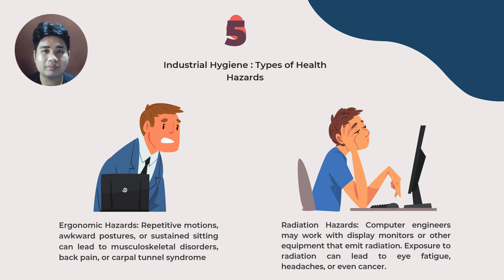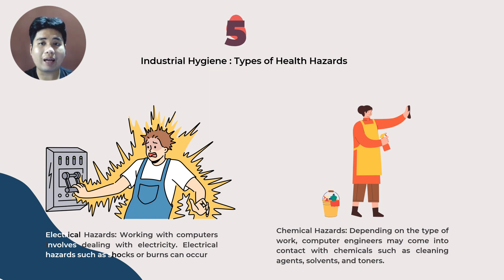We also have electrical hazards, which are prevalent in our working field. Working with computers involves dealing with electricity, and hazards such as shocks or burns can occur if proper safety measures are not followed. We also have chemical hazards present in our workplace, depending on the type of work being done. Computer engineers may come into contact with chemicals such as cleaning agents, solvents, and toner, which can pose risks if not handled properly. As computer engineers, we must be vigilant in identifying and managing these health hazards by being aware of ergonomic, radiation, electrical, and chemical risks and taking appropriate protective measures.